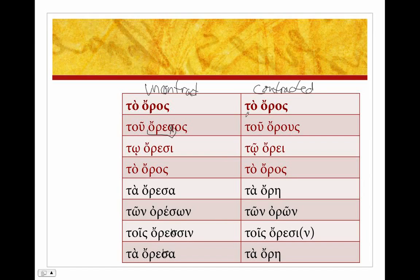So again, the thing to focus on here is: when you see a genitive singular and your second principal part ends in -oos, know that this is a contracted form. What has contracted out is an epsilon-sigma plus your ending, so you have to decontract it and then recontract it to find the proper endings.